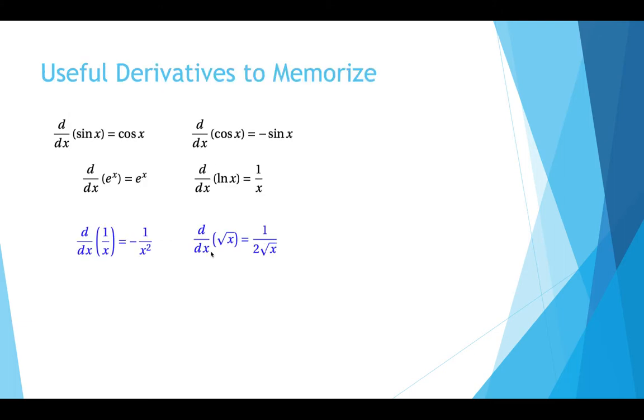These are some useful derivatives to memorize. The derivative of sine x is cosine x. The derivative of cosine x is negative sine x. The derivative of e to the x is e to the x – that's convenient. And the derivative of the natural log of x is 1 over x.